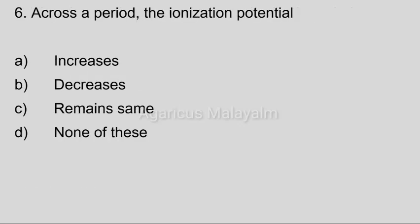Sixth question: Across a period, the ionization potential. Answer options — Option A: Increases. Option B: Decreases. Option C: Remains same. Option D: None of these. Correct answer: Option A, Increases.